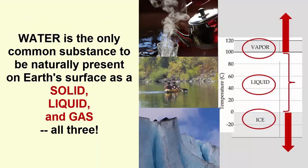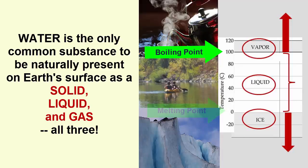Water is the only common substance found on Earth's surface naturally as a solid, ice, liquid, and gas, water vapor or steam. The boiling or vaporization temperature of fresh water is 100 degrees Celsius or 212 degrees Fahrenheit. The melting or fusion temperature of fresh water is 0 degrees Celsius or 32 degrees Fahrenheit. Notice the perfect 0 and 100 numbers — the Celsius scale was developed specifically around the main properties of water.